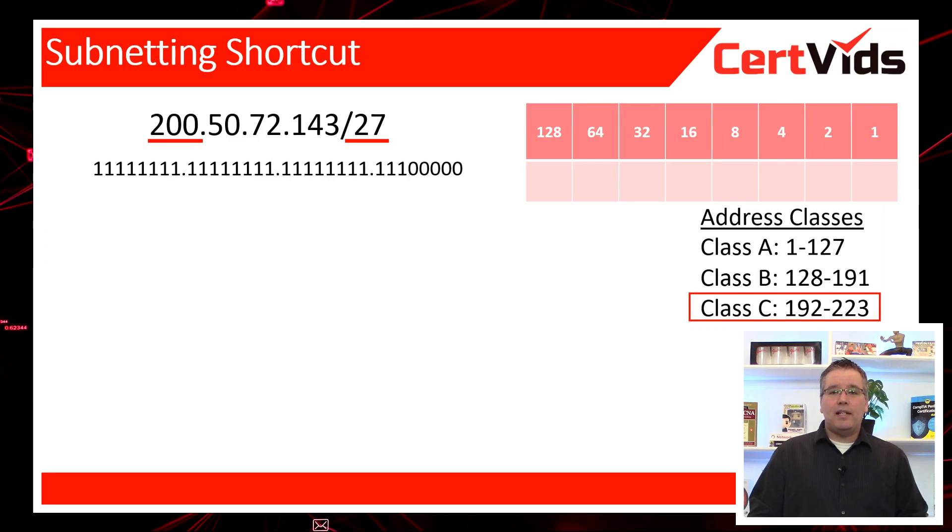So to figure out the network IDs, the next thing we've got to do is figure out the increment value. This is a bit of a shortcut. Instead of going through an entire subnetting example, we're going to get right to the punch, which is the increment value is the value of the last bit that's been enabled in the subnet mask. So when I take a look at this subnet mask written out in binary, we can see the third bit in the last octet is the last bit that's been enabled within the subnet mask.